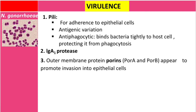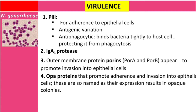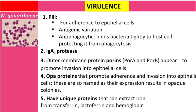Another virulence factor is outer membrane protein porins — Porin A and Porin B — which appear to promote invasion of this bacteria into epithelial cells. We also have Opa proteins, which promote adherence and invasion into epithelial cells, and their expression results in opaque colonies. Additionally, this bacteria has unique proteins that can extract iron from transferrin, lactoferrin, and hemoglobin.